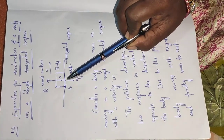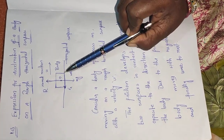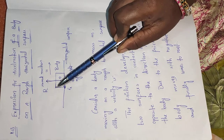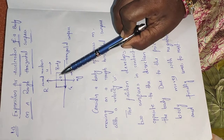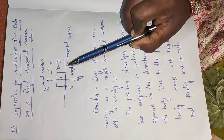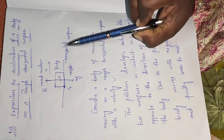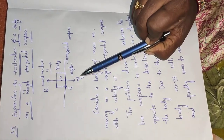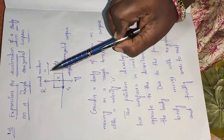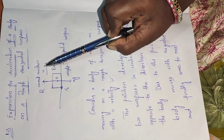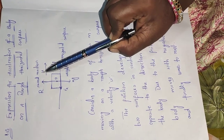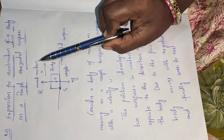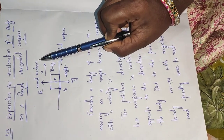This is the rough horizontal surface, and this is the one body. This is the horizontal surface; this is the weight, this is the initial velocity, and this is the normal reaction.